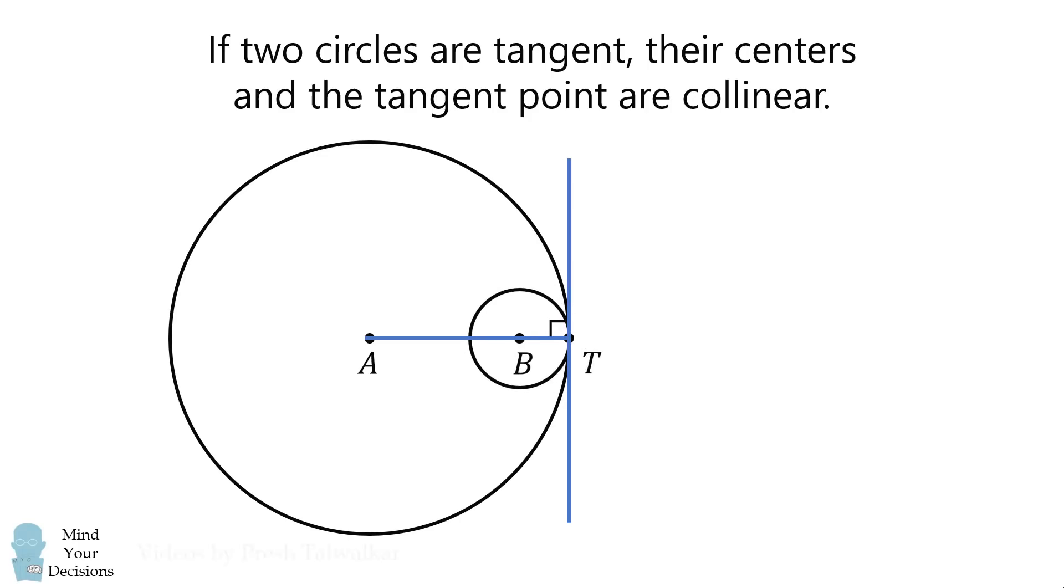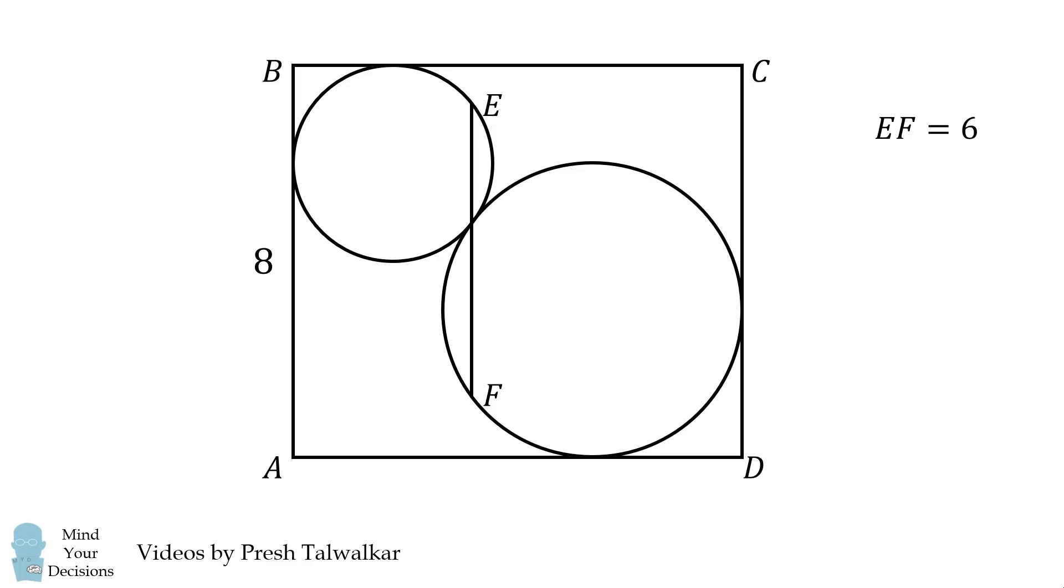We'll use these facts to solve the problem. We will first write T for the tangent point between the two circles. We will then construct the perpendicular bisector of ET, and that will contain the center of the top circle. We will then construct the perpendicular bisector of TF, and that will contain the center of the bottom circle.